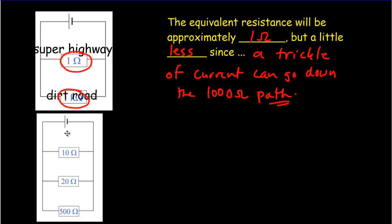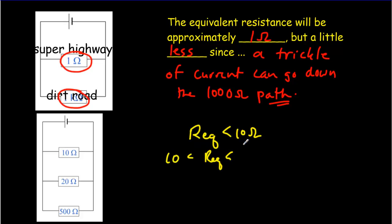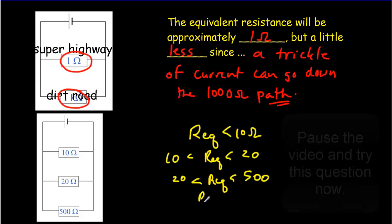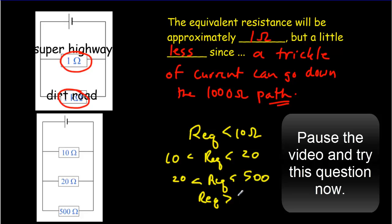Let's see if we can make an estimate for this circuit with a 500-ohm resistor, a 20-ohm resistor, and a 10-ohm resistor in parallel. The first thing I'd like you to do is make a guess. Do you think the equivalent resistance will be less than 10 ohms, between 10 and 20 ohms, between 20 and 500 ohms, or greater than 500 ohms? Let me stop the video now — try that question and then come back for the answer.